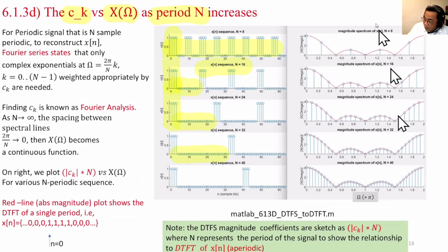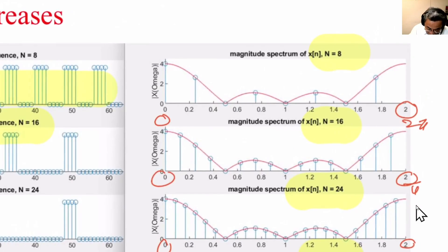This, on the right-hand side, shows the frequency representation for different N. And remember that in the frequency representation, the x-axis is from 0 to 2π. So all this is from 0 to 2π. And what is this red line? This red line is X of omega.